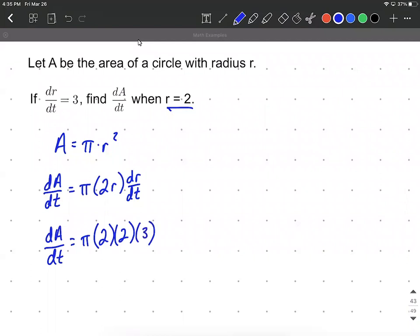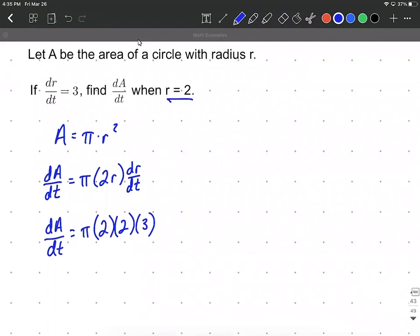All right from here just a little bit of simplifying down and we have dA/dt is going to equal 2 times 2 times 3 is going to be 12 pi. And there's our solution. I hope this helps with implicit differentiation. Good luck to y'all.